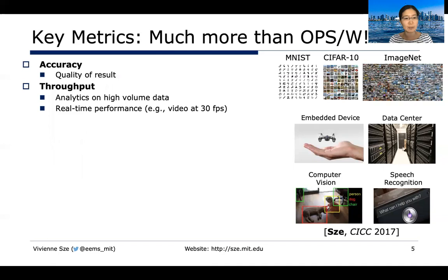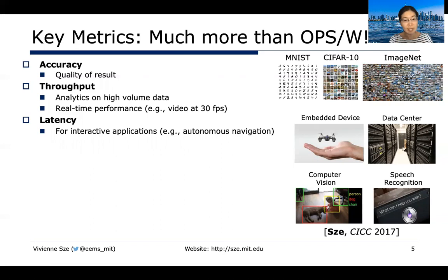Throughput is very important — if you process a lot of data, you want high throughput for analytics on high-volume data. Also, if you want real-time performance, for example video at 30 frames per second, throughput is going to be important. But when it comes to real-time or interactive applications, latency is going to be very critical. For example, autonomous navigation, where you have to interact with your environment, latency is very key.